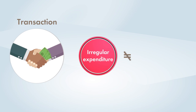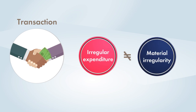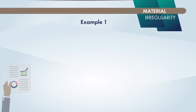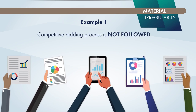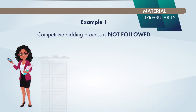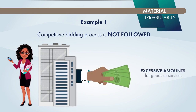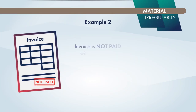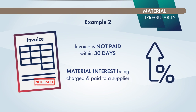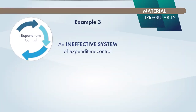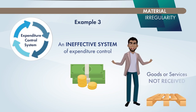Let's be clear — just because a transaction is classified as irregular expenditure does not make it a material irregularity. Here are some quick examples of material irregularity: If a competitive bidding process is not followed, as required by legislation, and results in an auditee paying excessive amounts for goods or services, this is material irregularity. When an invoice is not paid within 30 days, resulting in material interest being charged and paid to a supplier, this is material irregularity. An ineffective system of expenditure control resulting in payment for goods or services that have not been received is also material irregularity.